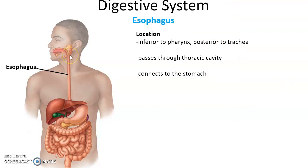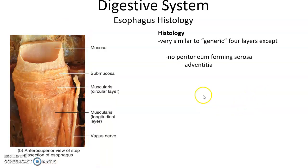The esophagus attaches to the inferior border of the pharynx. It is posterior to the trachea and leads through the thoracic cavity to the abdominal cavity where it connects to the stomach. The esophagus has the four layers we expect. The only difference is that the superficial layer, previously known as the serosa, is in this case known as the adventitia — because there is no peritoneum in the thoracic cavity. The adventitia is formed of its own connective tissue. So: mucosa, submucosa, muscularis, adventitia.